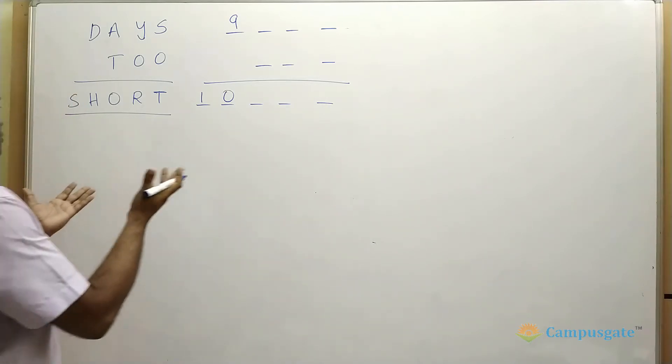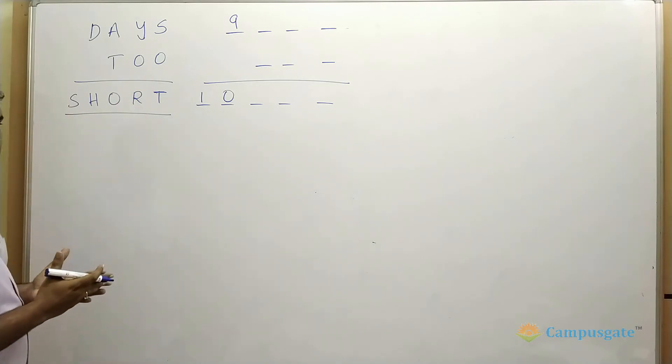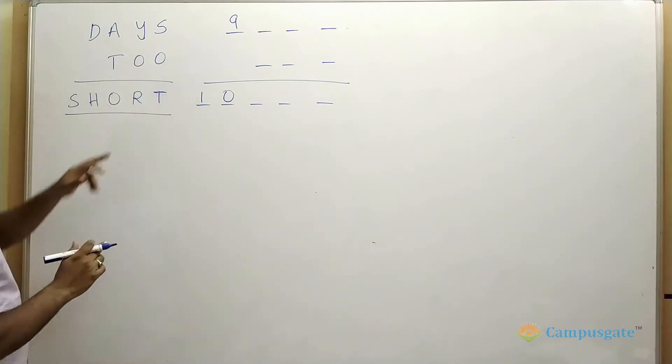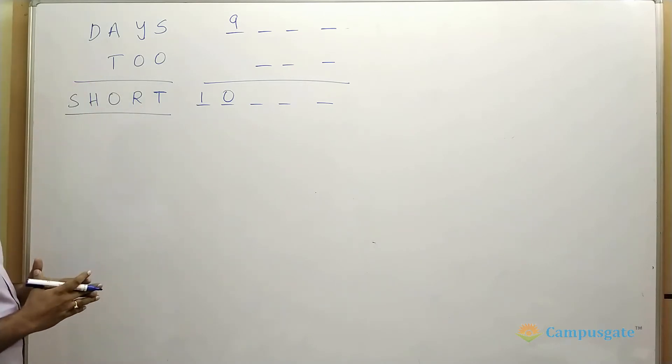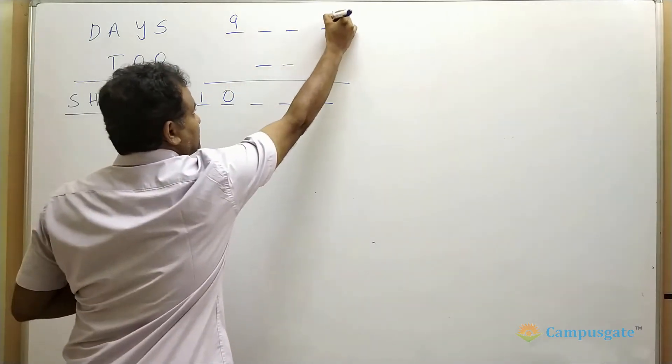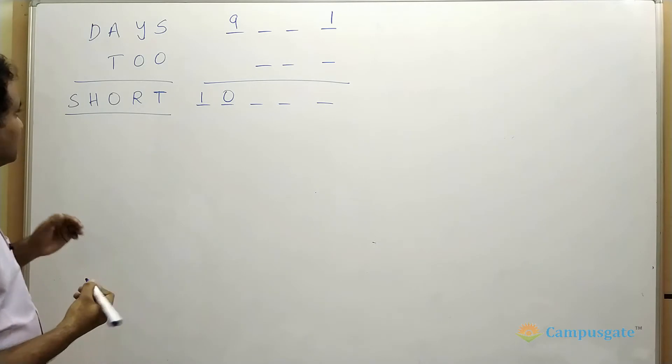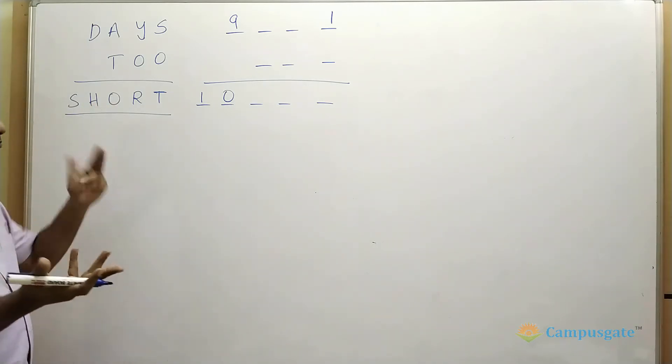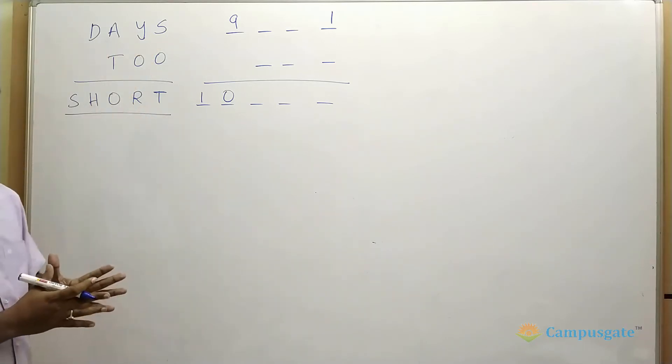Now what are the values that we should give to these alphabets? The first observation is here O is repeating three times and T is also repeating two times, and S equals 1 I am substituting here. Now what are the different values O can take? So O can take any value from 2 to 8 because 9 we have already given, 1 we have already given.